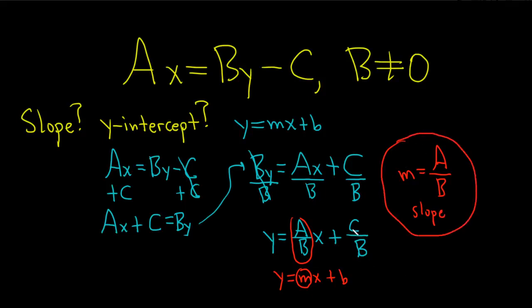The other answer is the y-intercept. The y-intercept in this case equals C over B. You can write this as an ordered pair. This is your y-value, so that goes here, and then comma 0. That's your x-value.